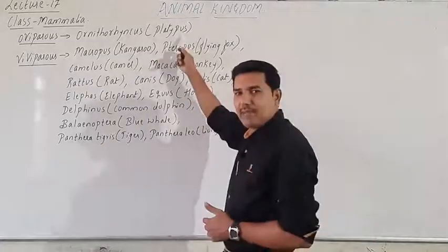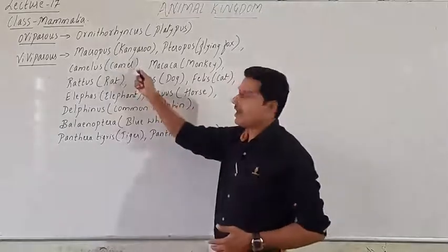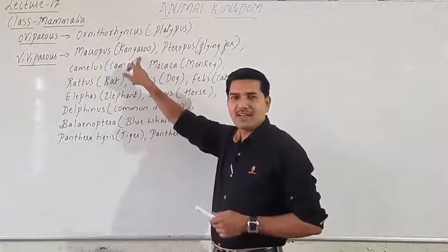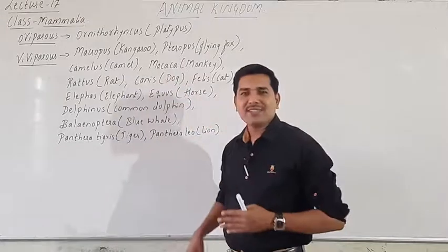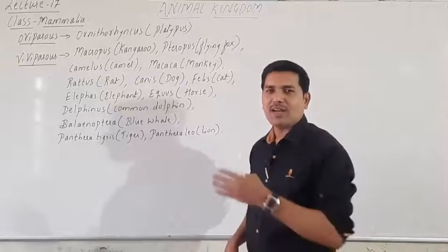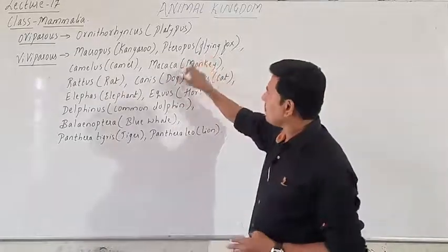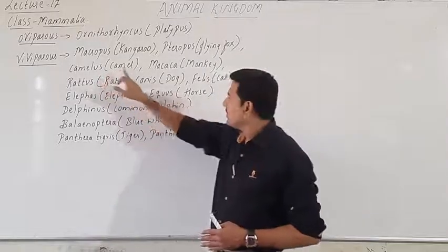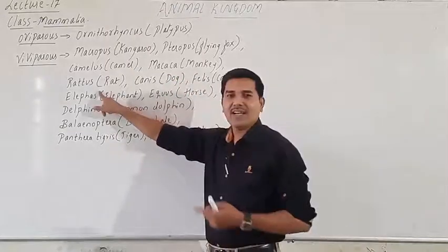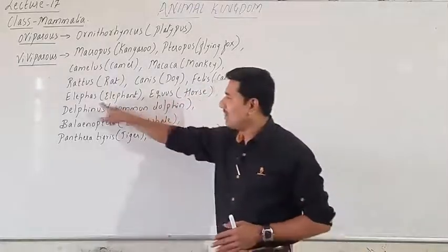Now for viviparous examples: Macropus is kangaroo, restricted to the Australian region. Pteropus is commonly called the flying fox. Camelus is the camel. Macaca is monkey. Rattus is rat. Canis is dog. Felis is cat. Elephas is elephant. Equus is horse.